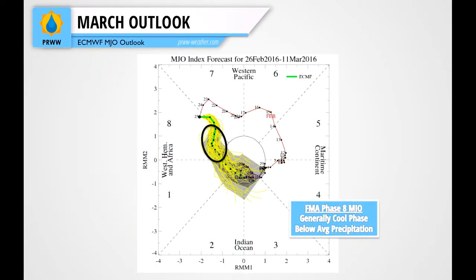Another thing I'd like to look at is the Euro MJO forecast, or the Madden-Julian Oscillation. As we end out February, the MJO is likely going to move back into Phase 7, but in the first week of March we're going to see it move into Phase 8. Phase 8 for the northeast United States and our coverage area is a generally cool phase, which is another reason why we're going to see cold temperatures in early March. Phase 8 is also associated with below-average precipitation, which is one of the reasons the CFS precipitation model is predicting closer to average precipitation for early March.